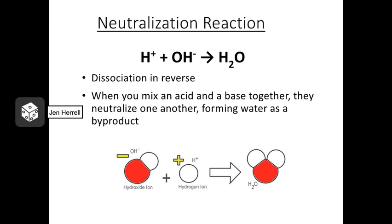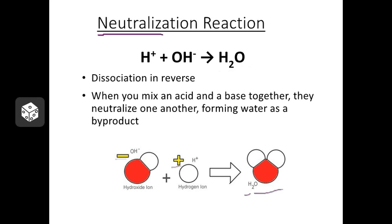Now let's consider what happens when we reverse this reaction. If we take some acid — some hydrogen ions — and some hydroxide and put them together, they form water again. The negative of the hydroxide is going to be attracted to the positive of that hydrogen, and they get together to form neutral water. For this reason, when you combine an acid and a base together, we call this a neutralization reaction.